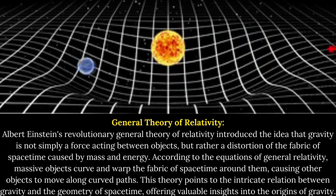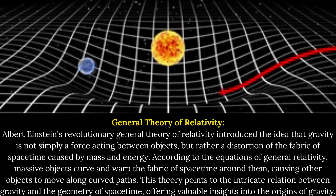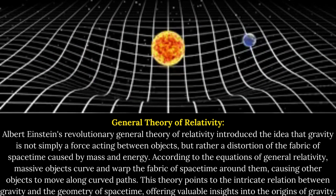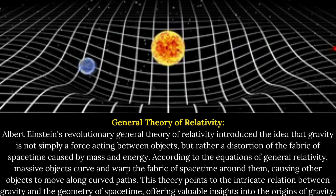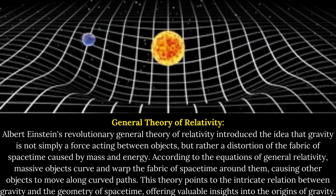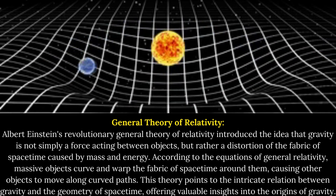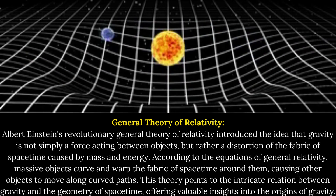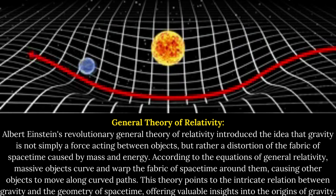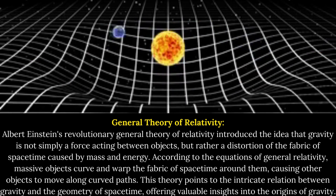General Theory of Relativity: Albert Einstein's revolutionary General Theory of Relativity introduced the idea that gravity is not simply a force acting between objects, but rather a distortion of the fabric of spacetime caused by mass and energy. According to the equations of general relativity, massive objects curve and warp the fabric of spacetime around them, causing other objects to move along curved paths. This theory points to the intricate relation between gravity and the geometry of spacetime, offering valuable insights into the origins of gravity.